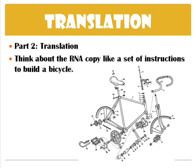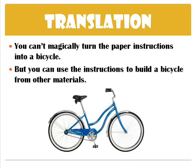Now we're looking at translation — part two of this whole process. It's helpful to think about RNA like a set of instructions to build a bicycle or maybe an IKEA piece of furniture. It's just this paper-type instruction that you are going to read. You can't fold the paper instructions a special way and turn them into a bicycle — you actually have to use other materials to build it. That's the process we're talking about with translation.